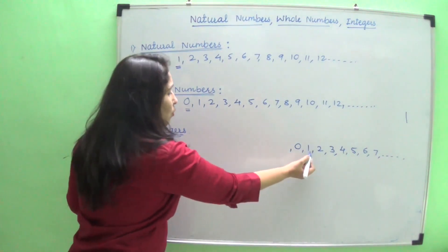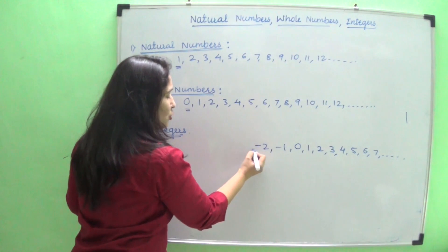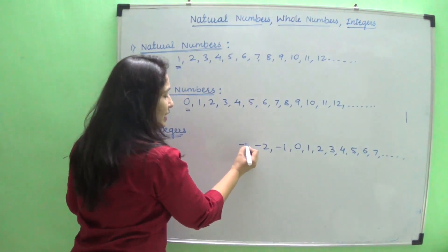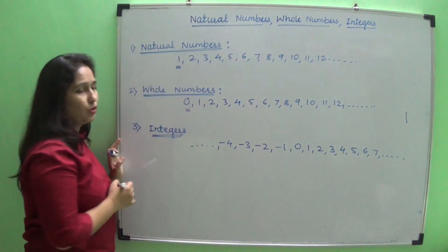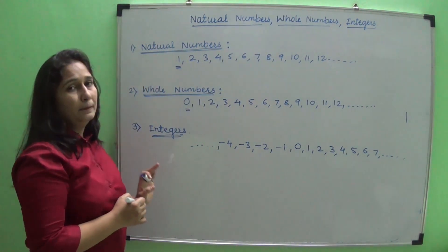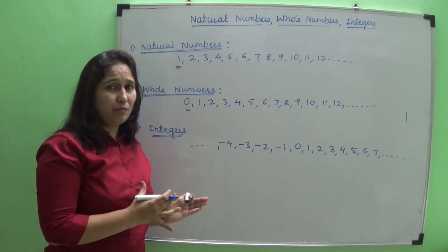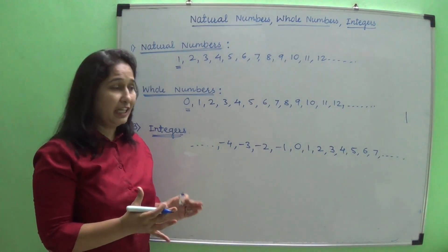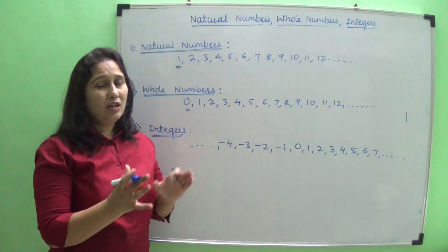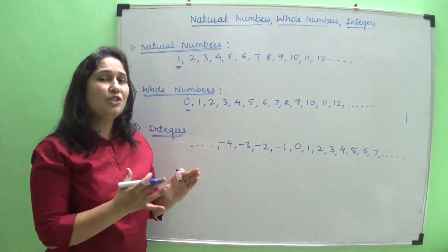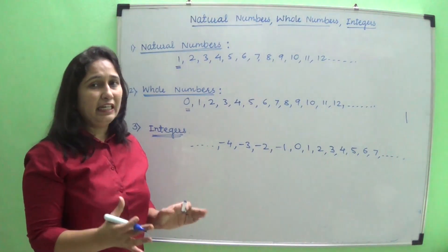So positive 1 becomes minus 1, positive 2 becomes minus 2, then minus 3, minus 4, and so on. When we talk about integers, we get some negative numbers, some positive numbers, and also zero. The definition of integers is: all whole numbers and the opposites of natural numbers together make the set of integers.